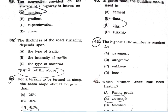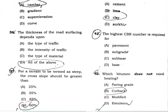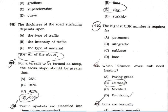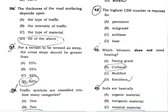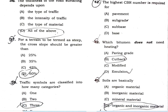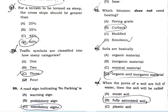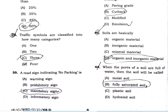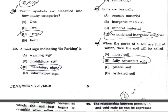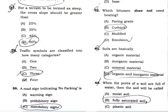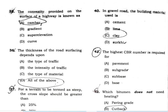The thickness of road surfacing depends on the type, intensity, and the type of material. For hilly terrain, cross slope should be greater than 60%. Traffic symbols are classified into three categories. No parking is an example of a mandatory sign.